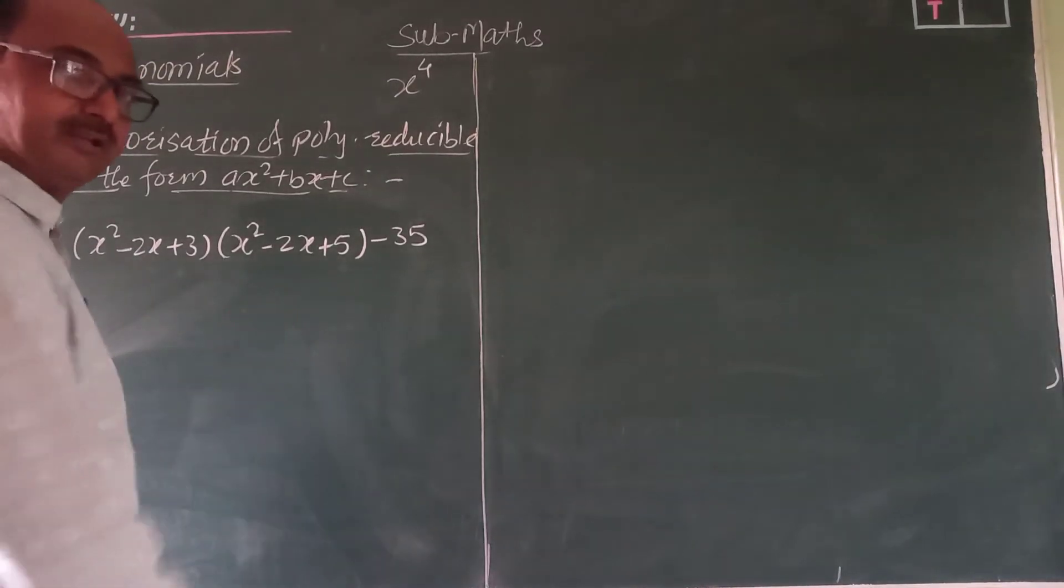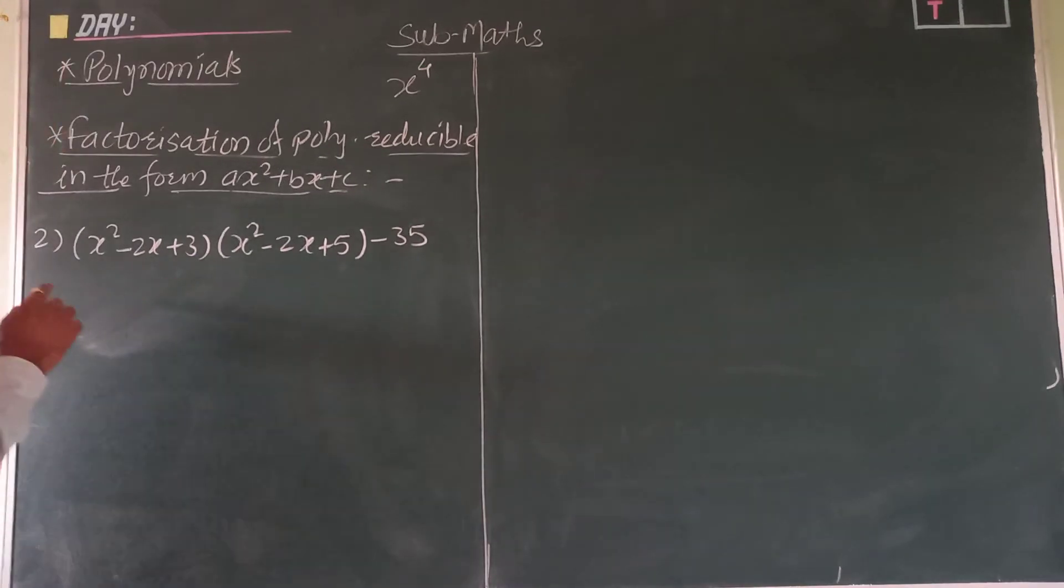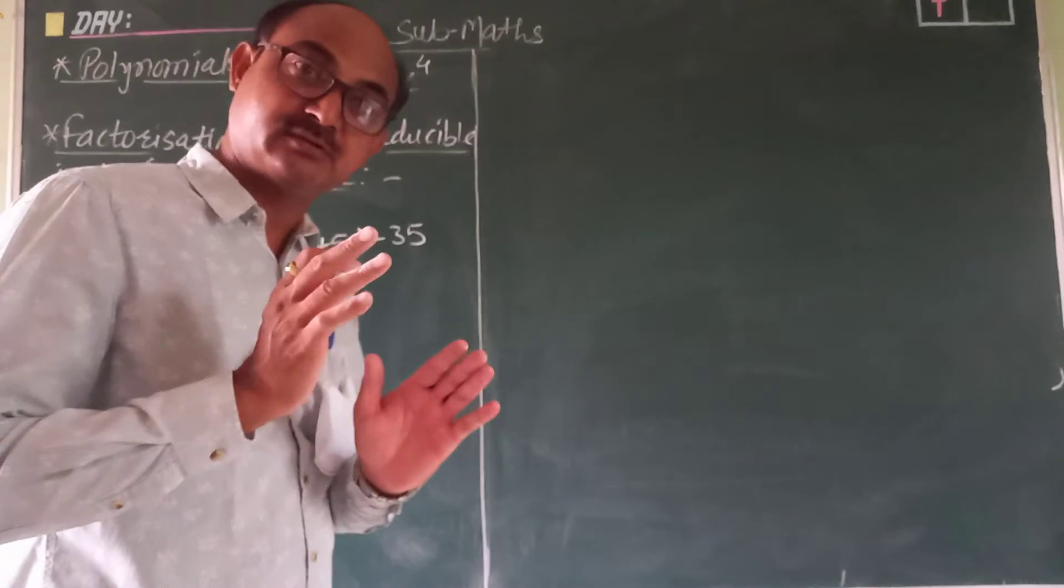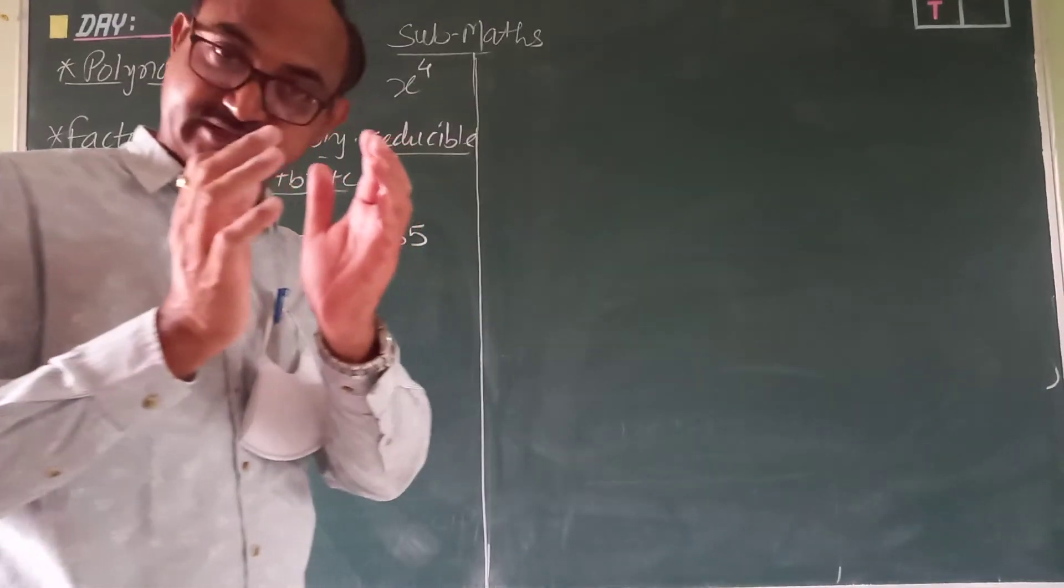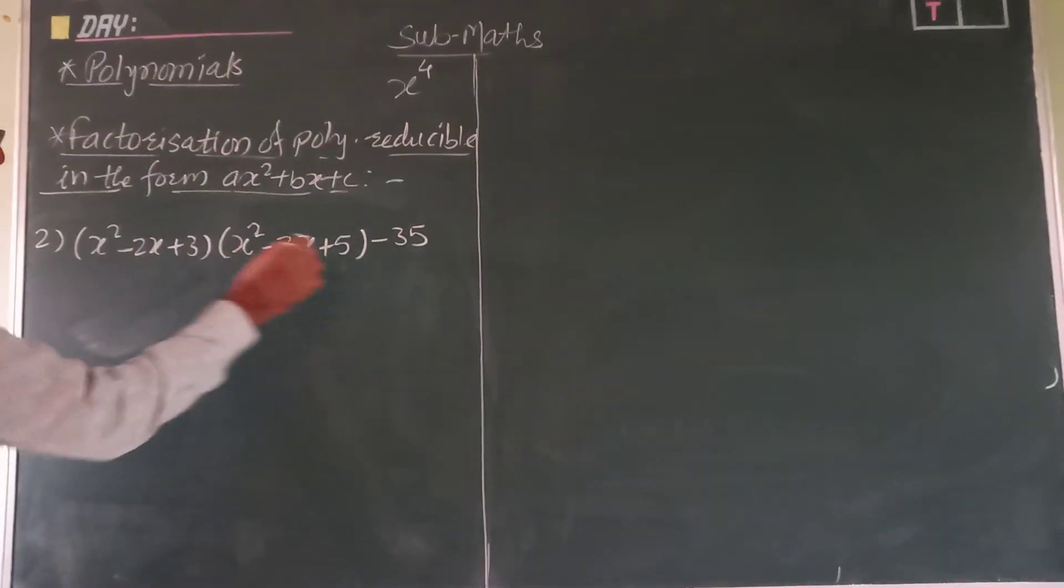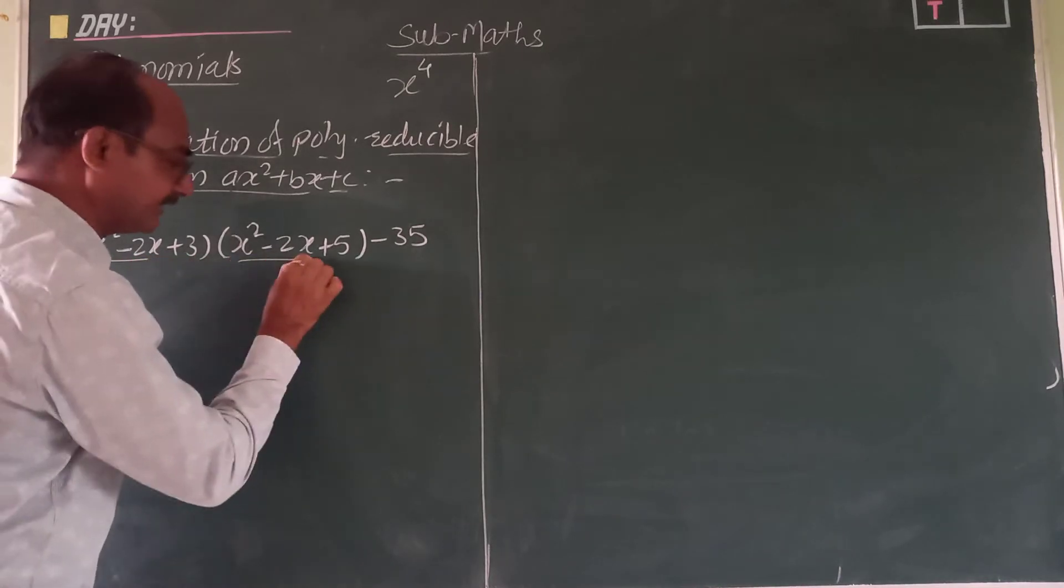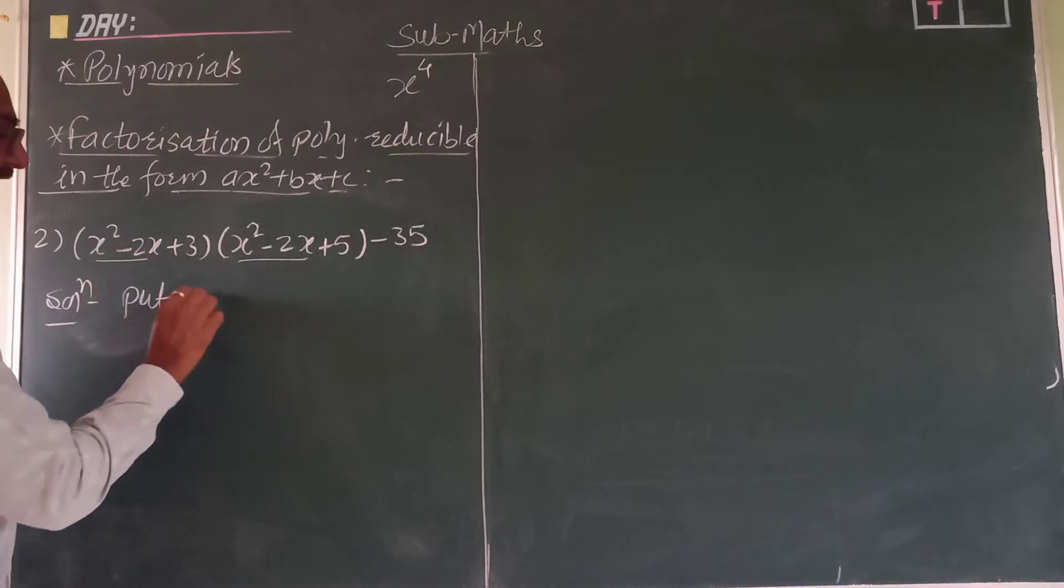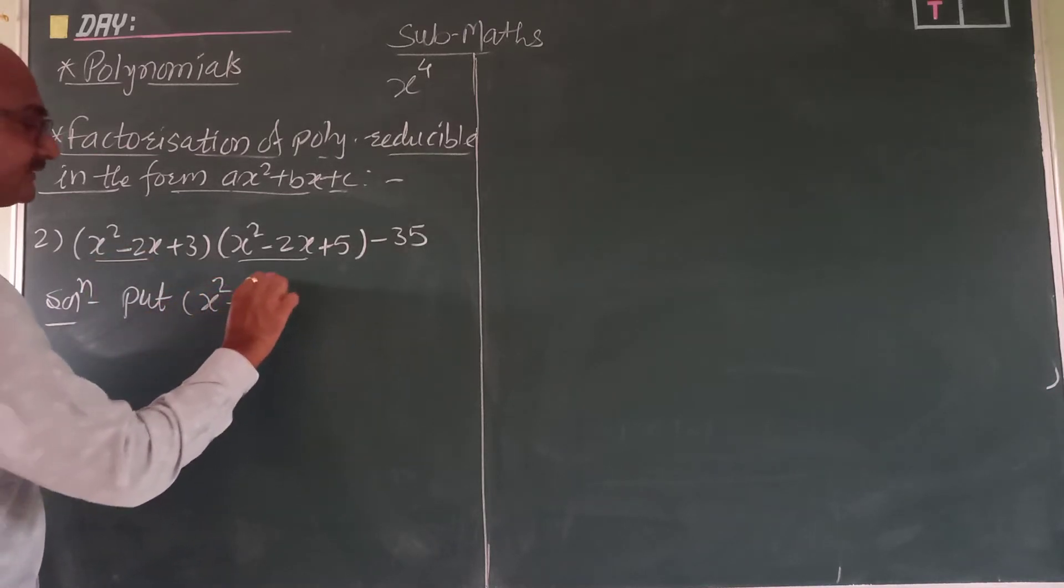Now the second example. Here first you have to find what is the same - not the whole bracket, maybe two terms are the same. So here in these two brackets, see, only these two terms are the same. If these two terms are the same, you suppose you put this x square minus 2x is equal